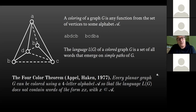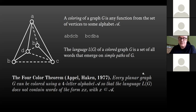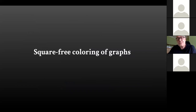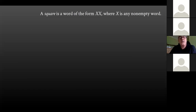In this setting, the famous four color theorem becomes a statement in combinatorics on words, because it says that any planar graph has a coloring over a four-letter alphabet such that in the language of this colored graph, we never have words of the form XX, where X is a single letter. This is just saying the same thing in slightly different language. Now I'm going to define square-free coloring of graphs, a notion which in this setting is very natural. A square is a word which is a concatenation of two copies of the same word.